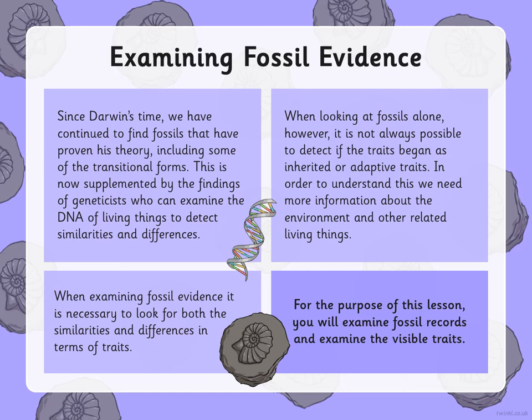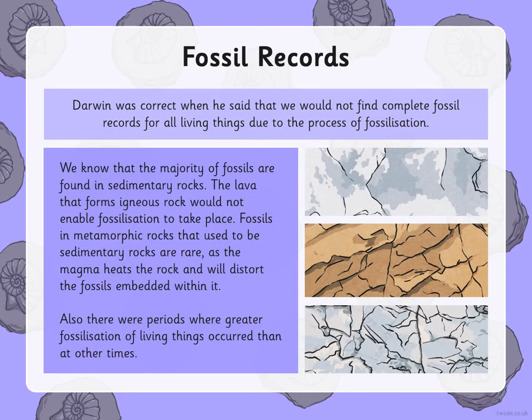Inherited traits are those passed down through genes from your parents. Adaptive traits are traits that are learnt and may be taught by your parents — these are very different. Darwin was correct when he said that he would not find complete fossil records for all living things due to the process of fossilisation, as we mentioned earlier.